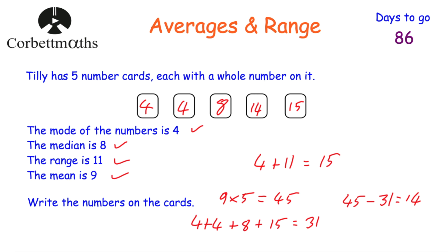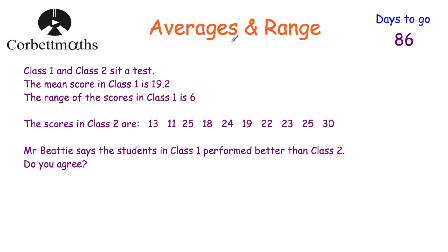Let's have a look at our last question. When dealing with the mode, median, mean and range, one thing we can be asked to do is compare two different groups — that's one of the benefits of working out averages and the range. Here we've got class one and class two sitting a test. The mean score in class one is 19.2 and the range is 6. The scores in class two are 13, 11, 25, 18, 24, 19, 22, 23, 25 and 30. Mr. Beatty says the students in class one performed better. Do we agree?